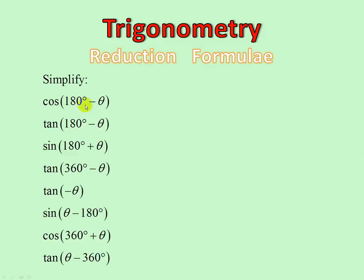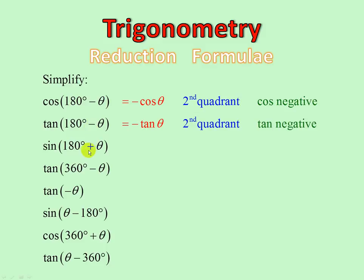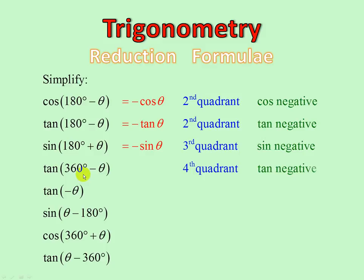Cos of 180 minus theta: second quadrant, tan negative, therefore negative tan theta. 180 plus: third quadrant, sin negative, therefore negative sin theta. 360 minus: fourth quadrant, tan negative, therefore negative tan theta. Negative theta: fourth quadrant, tan negative, therefore negative tan theta.